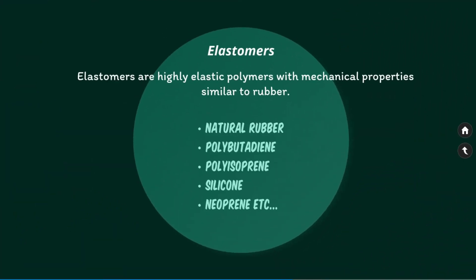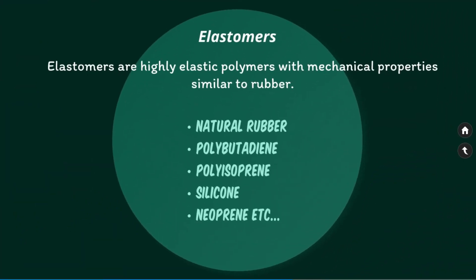Another category of polymer is elastomers. Elastomers are highly elastic polymers with mechanical properties similar to rubber, and are commonly used for seals, adhesives, hoses, belts, and other flexible parts. The strength and stiffness of rubber can be increased through a process called vulcanization, which involves adding sulfur and subjecting the material to high temperature and pressure. This process causes cross-links to form between the polymer chains.